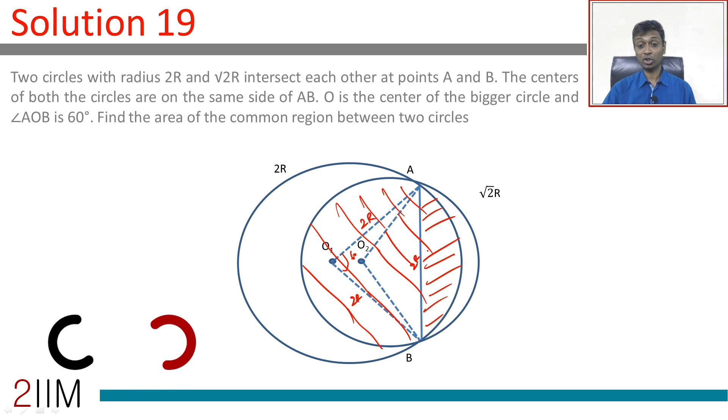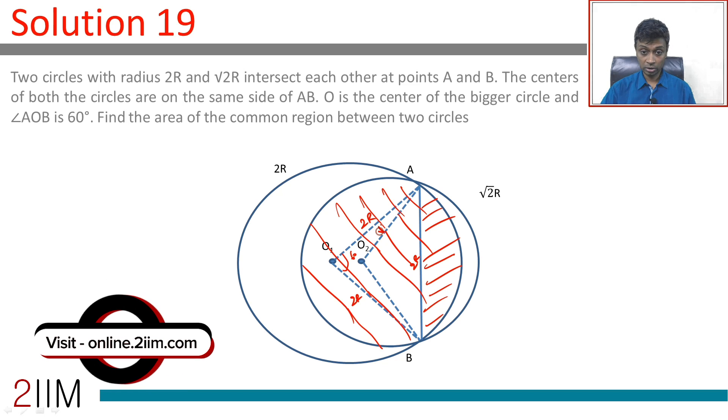Now if you imagine the smaller circle, this is root 2R, this is root 2R. The ratio of the sides is root 2 is to root 2 is to 2, or 1 is to 1 is to root 2. This is an isosceles right angle triangle. This angle here is 90 degrees. It really helps.